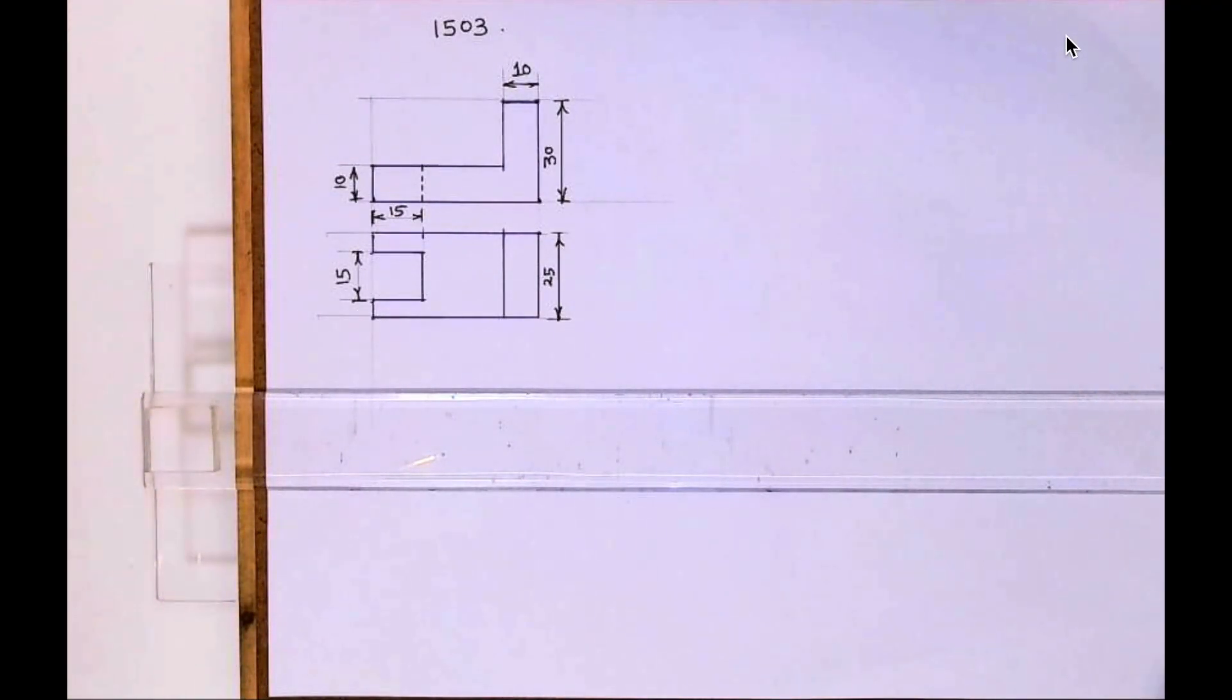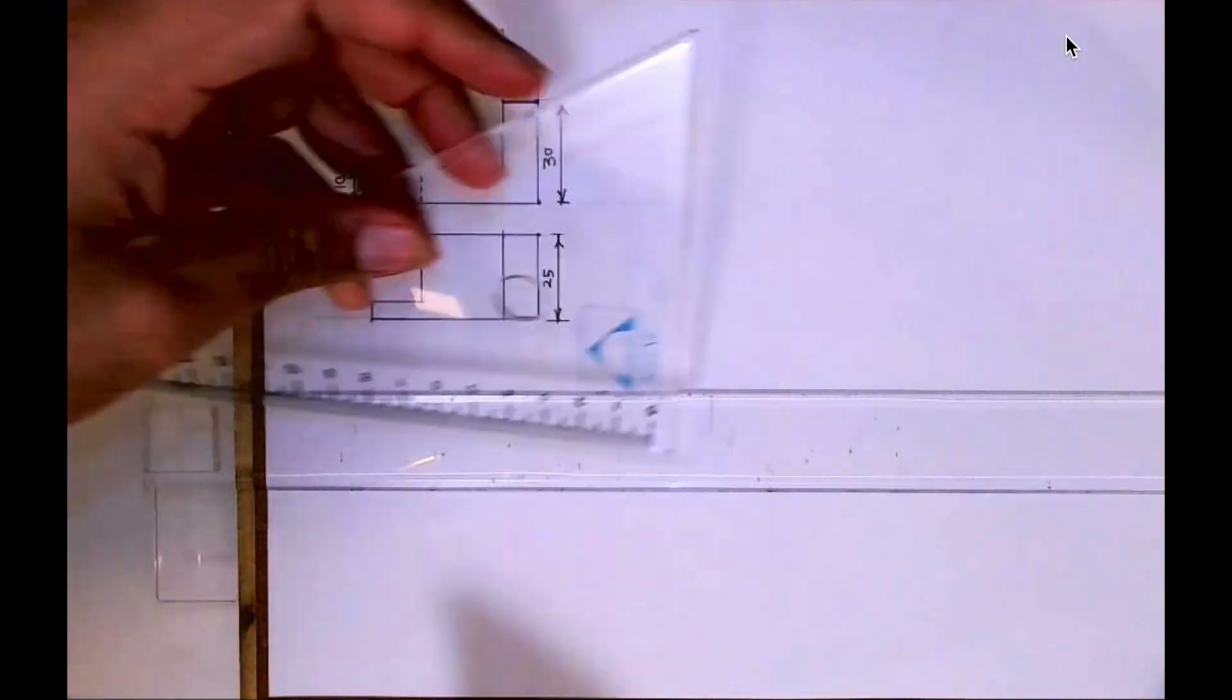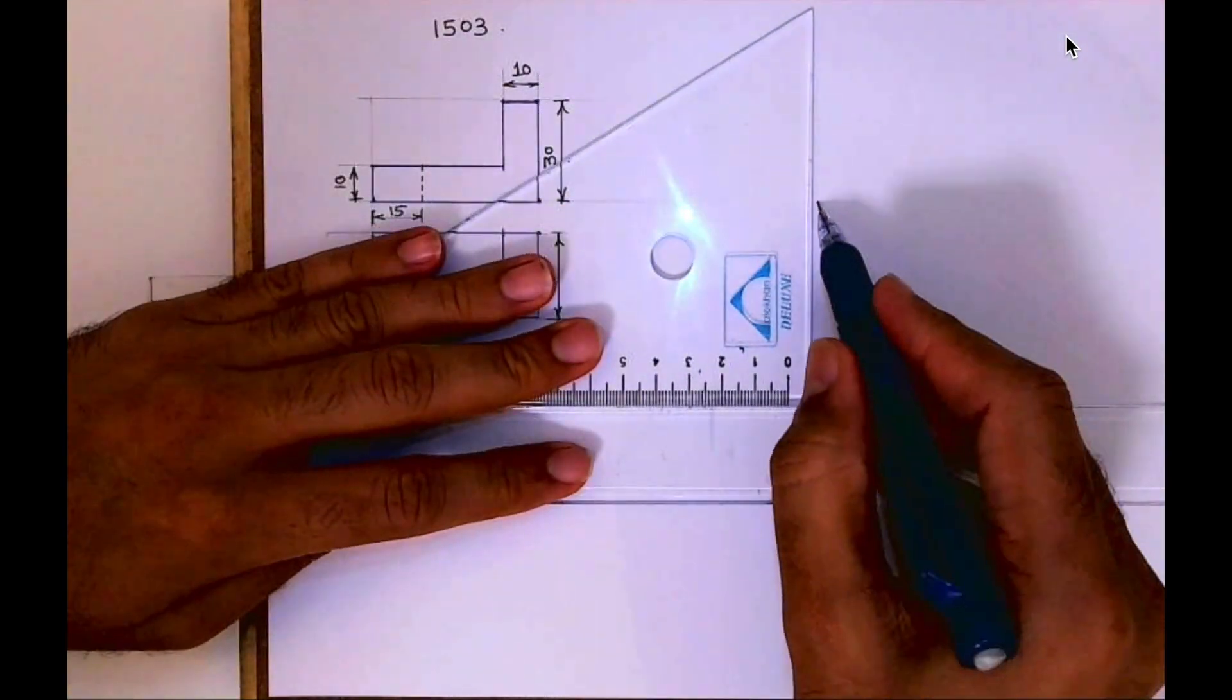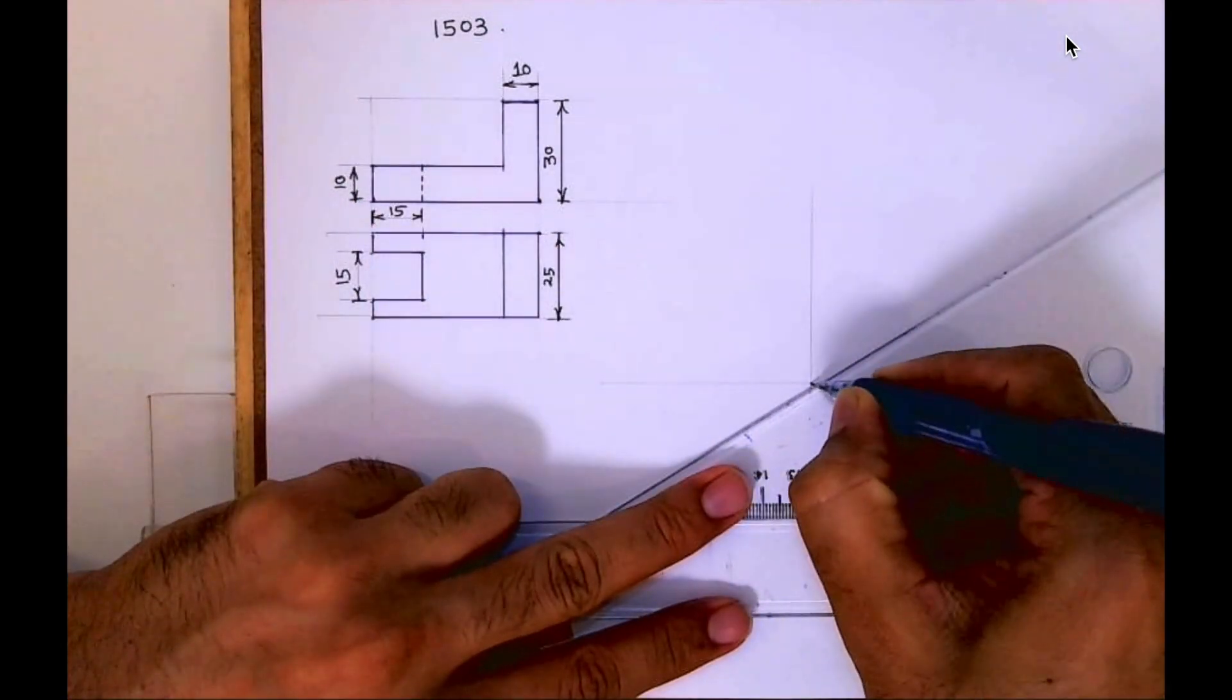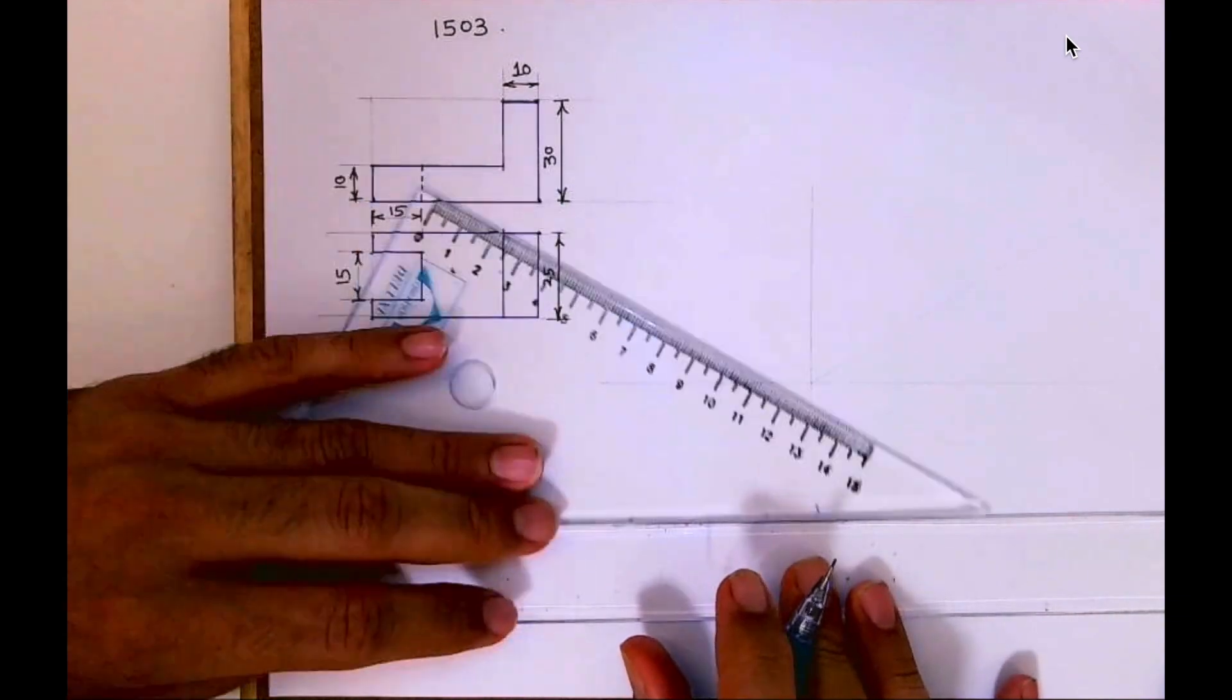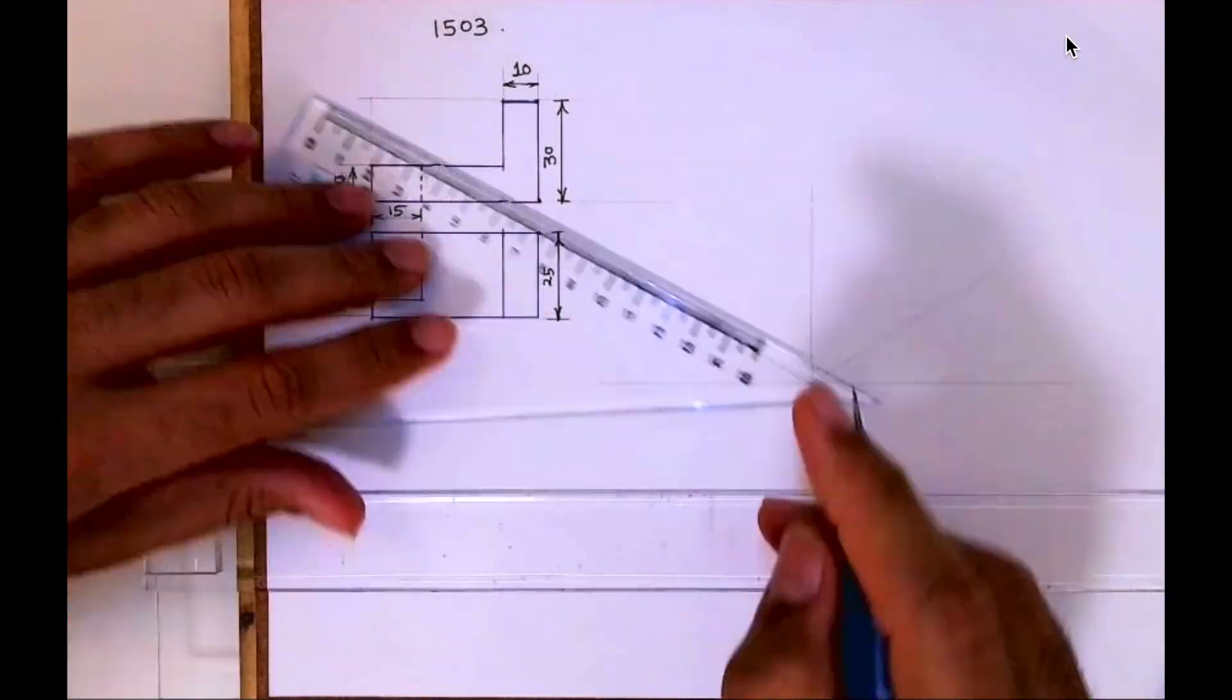Welcome to technical drawing. Today we will see this problem in isometric. First we will draw the layout. I will draw vertical and horizontal lines and 30-degree angles. Like this, with a 30-degree set square I can draw.